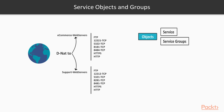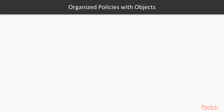We're also going to take advantage of service groups. With service groups you have the same approach as address groups — we're going to combine all those ports that are relevant to an application and put them in a particular service group. In service objects and groups, we're going to be creating service objects for custom ports — for example, TCP 8185 or any custom port that doesn't already have an object on the Palo Alto.